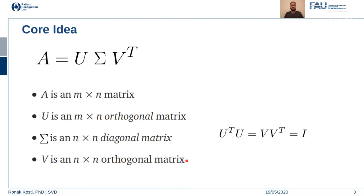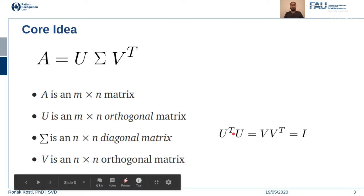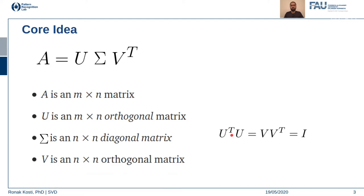Before going ahead, for anyone who doesn't know what an orthogonal matrix is: basically the transpose of the matrix is its inverse, so this equation holds. Any matrix whose inverse equals its transpose is an orthogonal matrix. The rows and columns of such matrices, when multiplied, result in an identity matrix. Orthogonal matrices are a special case of unitary matrices. Unitary matrices are dealt with in the complex domain, where instead of a transpose there is a complex conjugate, and multiplying a complex matrix by its complex conjugate results in an identity matrix.